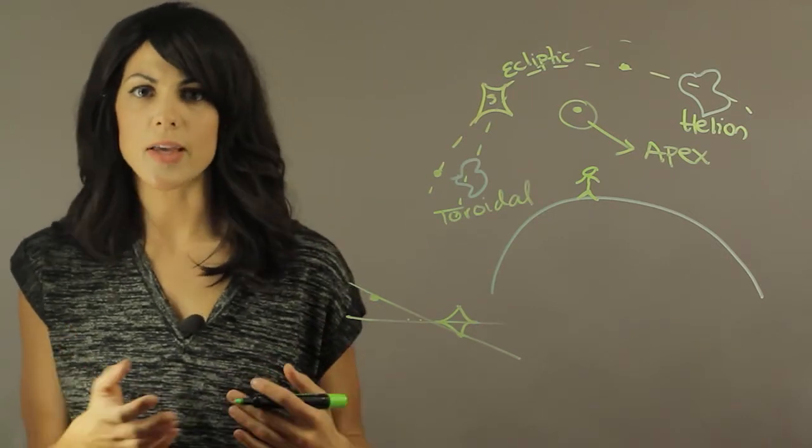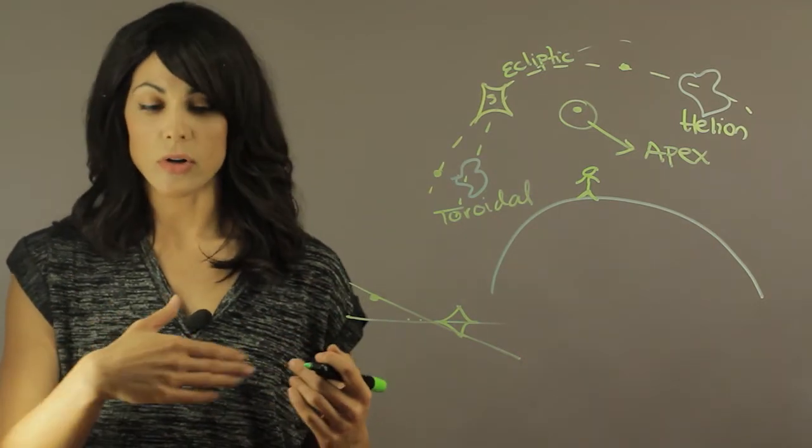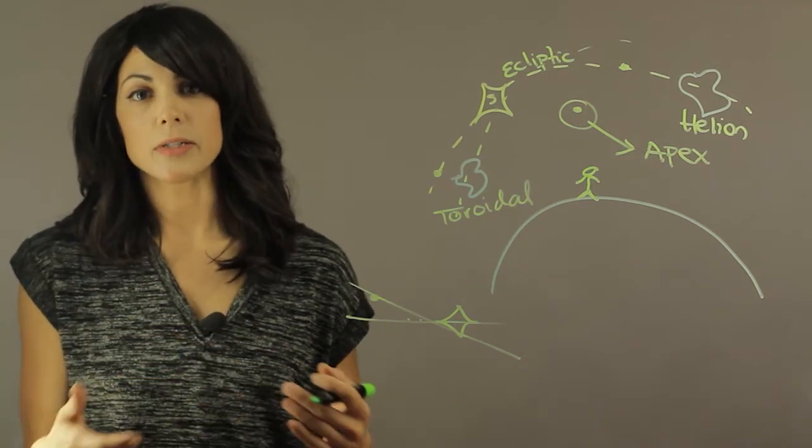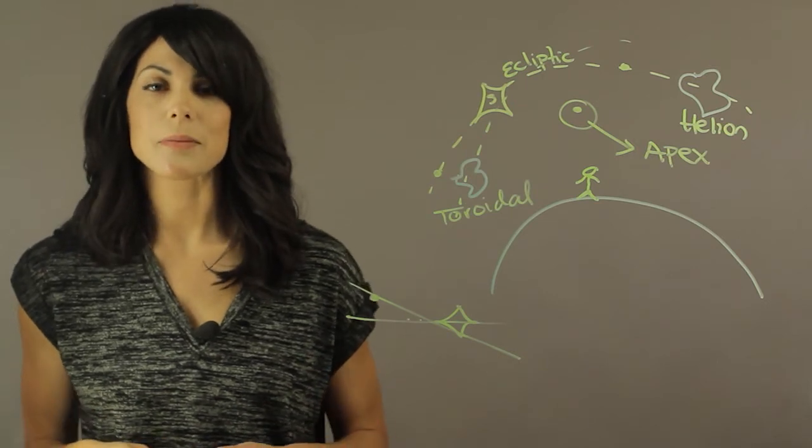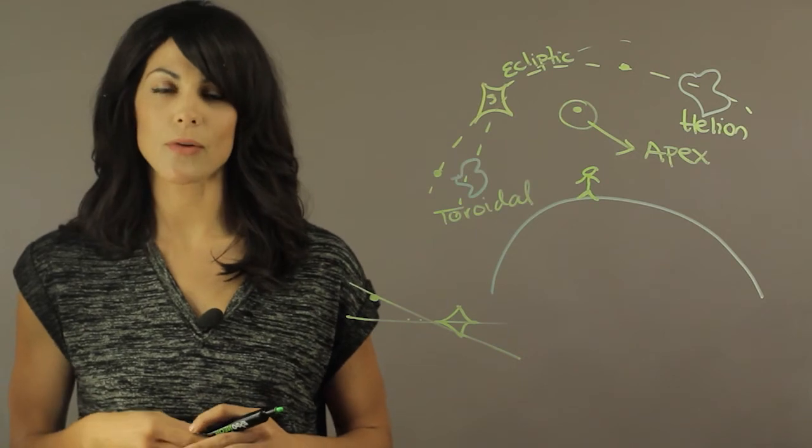And this is why they occur. They can occur anytime that Earth's orbit or Earth's path encounters any debris left in space. My name is Aileen Perez. I'm an astrophysicist and this is what are meteor outbursts and why do they occur.